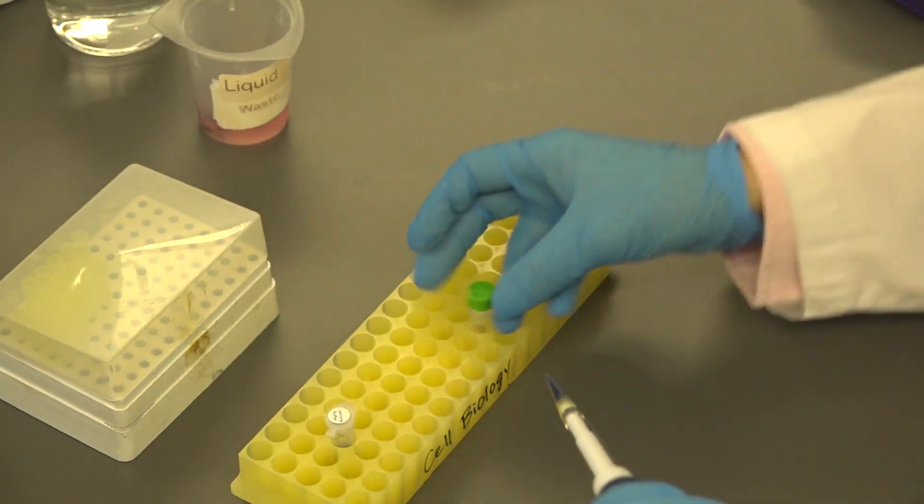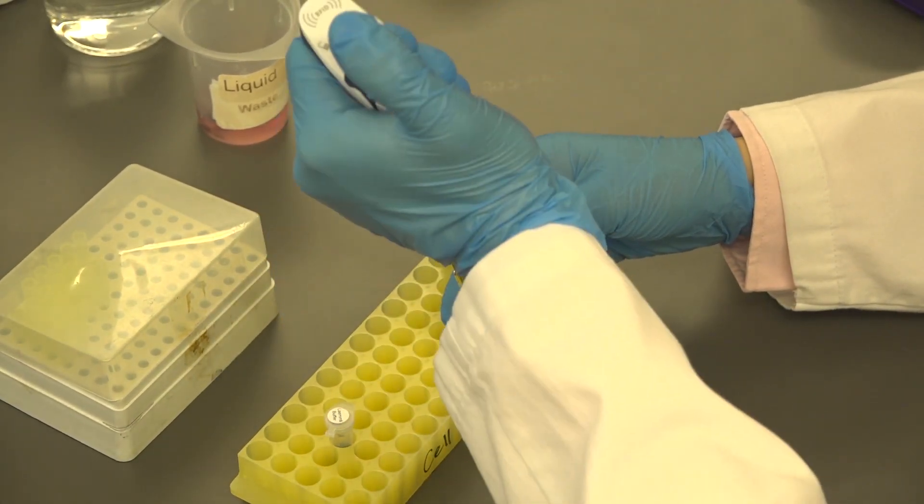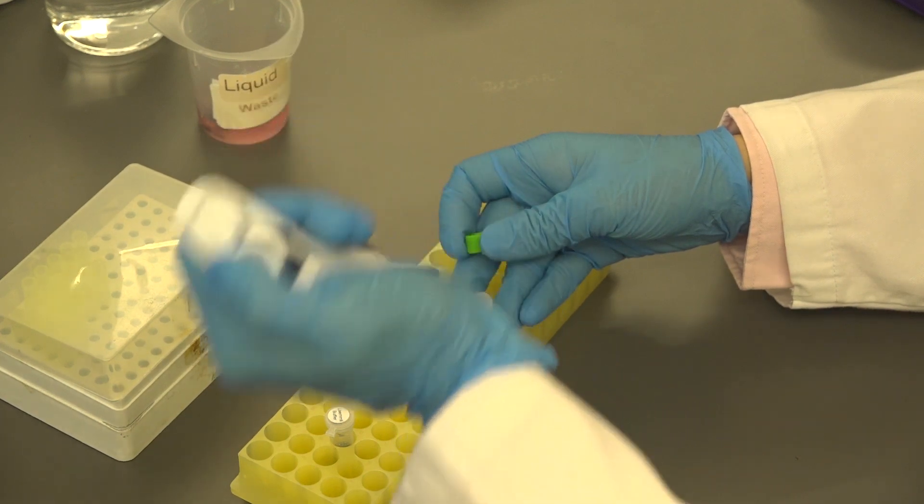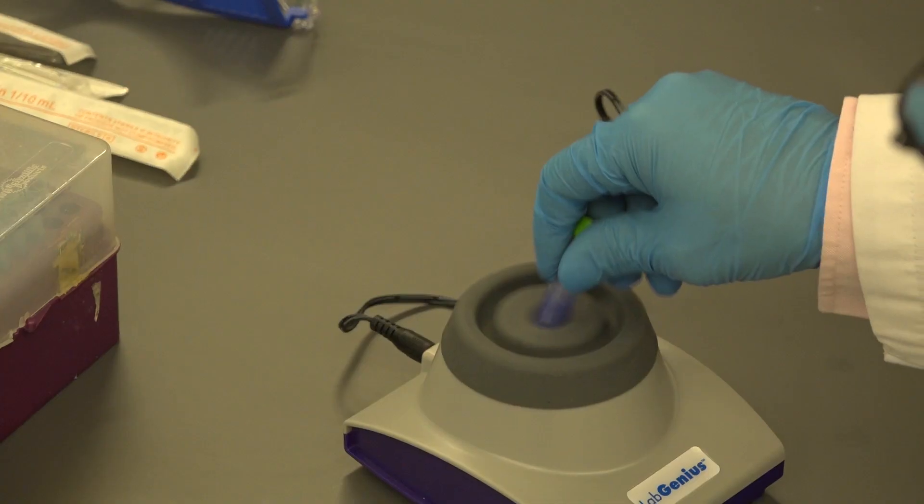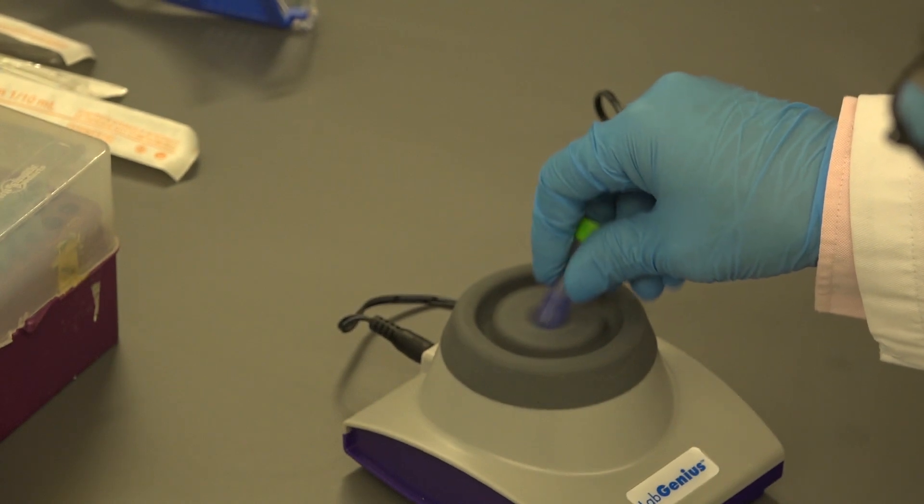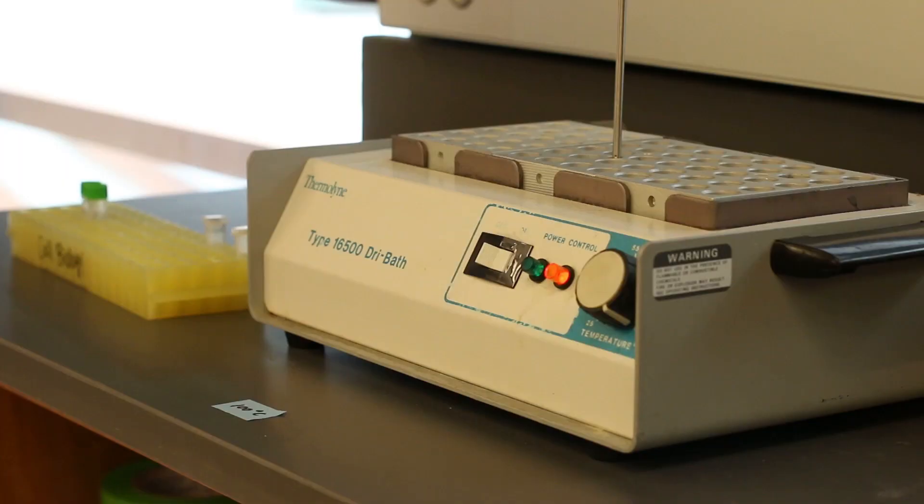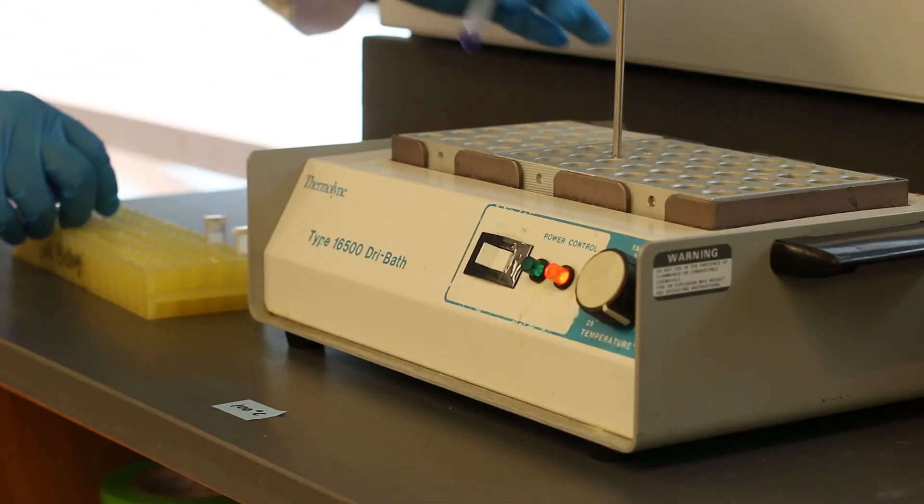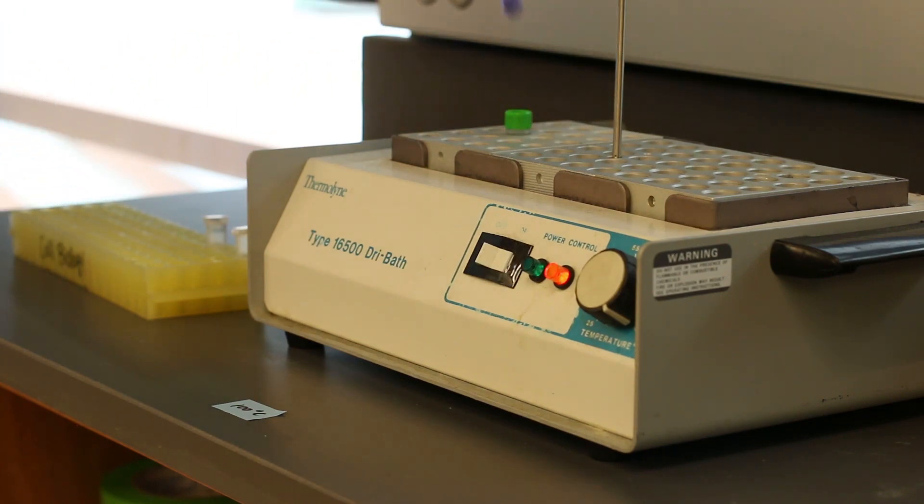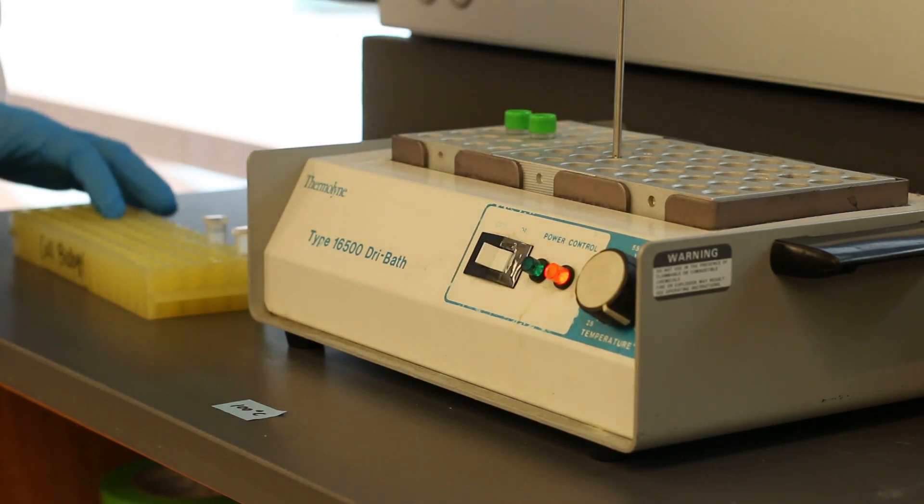Use a P200 to pipette 200 microliters of Laemmli buffer carefully into each tube. Vortex the tube until there's no visible clumps left in the tube.